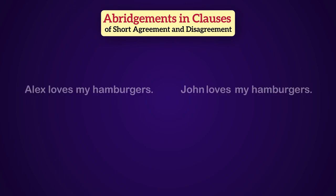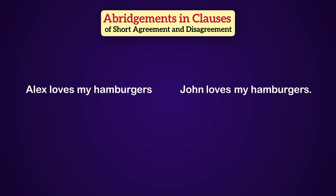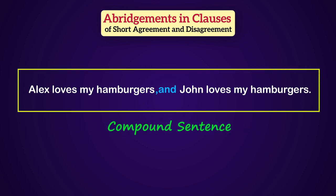For example, here we have two sentences. One: Alex loves my hamburgers. Two: John loves my hamburgers. Now they can be joined into one by a coordinate conjunction like AND. So we can say: Alex loves my hamburgers, and John loves my hamburgers. Here we have a compound sentence.